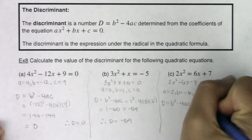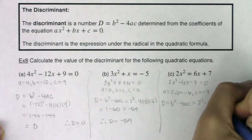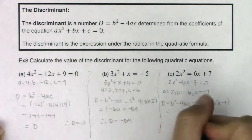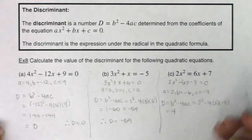So we are looking at 2 squared minus 4 times 2 times negative 7. So that is 4. 4 times 2 is 8. 8 times negative 7 is positive 56.